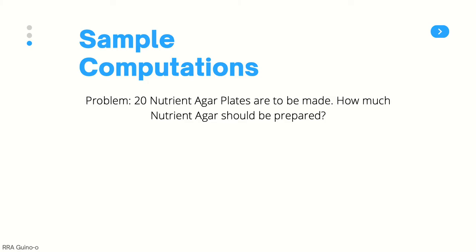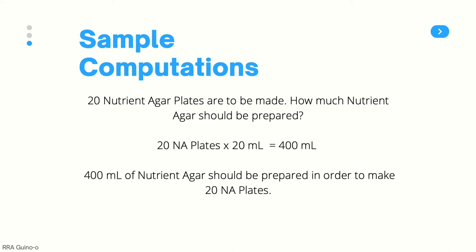Here we have a sample problem: we need 20 nutrient agar plates. How much nutrient agar should be prepared? The answer is 400 ml. We needed 20 nutrient agar plates, and per plate we have 15 to 20 ml. We choose the 20 ml volume to make sure all our plates are completely filled up. So 20 times 20 is equivalent to 400 ml — we need 400 ml of nutrient agar to make 20 nutrient agar plates.